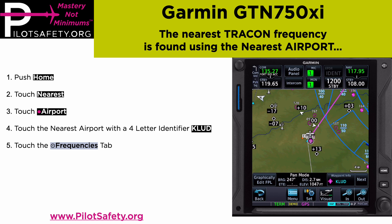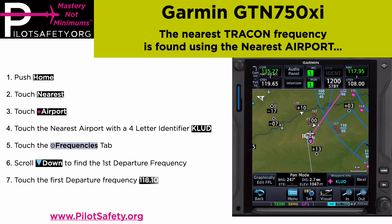Then I'm going to touch the Frequencies tab and scroll down to find the first departure frequency. I'll touch that first departure frequency — in this case it's going to be 118.10 — and then I'm just going to load 118.10 to COM active.